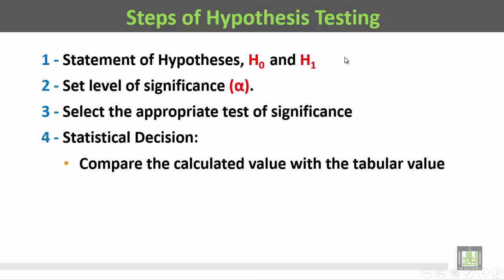There are two steps in the statistical decision. The first is to compare the calculated value with the tabular value. اول خطوة في القرار الاحصائي هي مقارنة القيمة المحسوبة بالقيمة الجدولية.